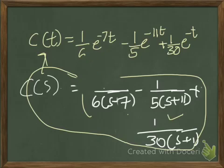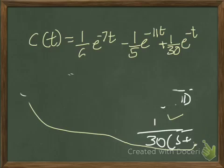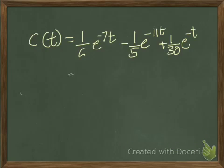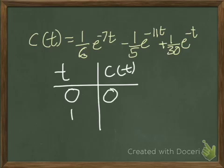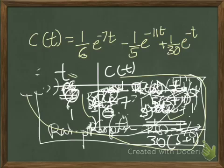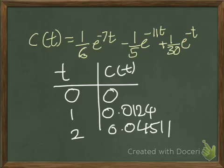This doesn't mean the problem is over — there is more to do. You now have to plot the step response on a graph sheet. Before that, substitute different values of t. When t = 0, the response is 0. When t = 1, you get approximately 0.0124. When t = 2, you get approximately 0.04511. Substitute t values and find c(t) in this way.